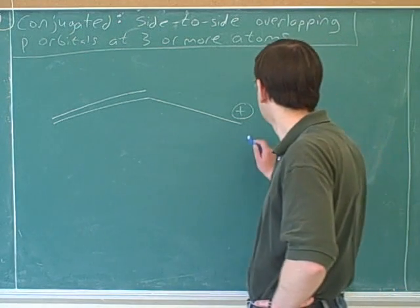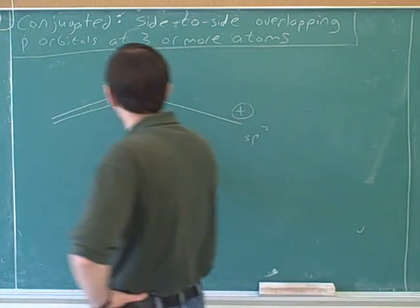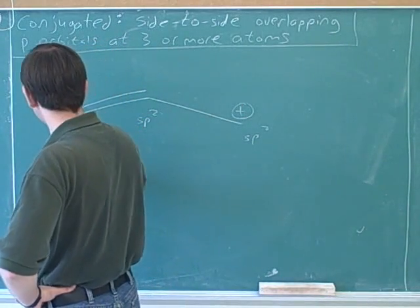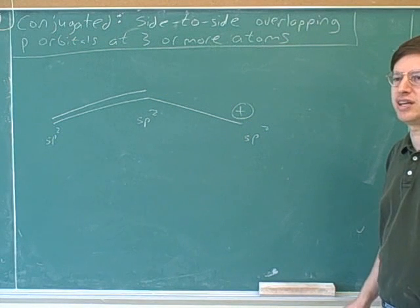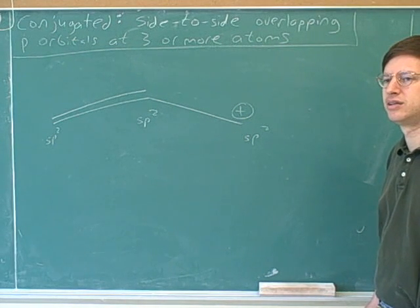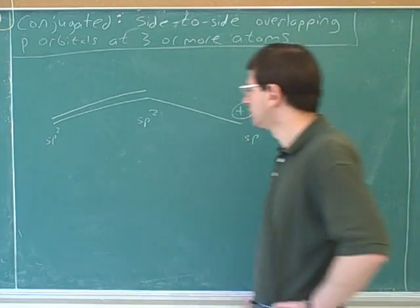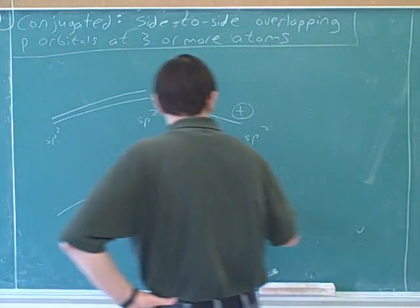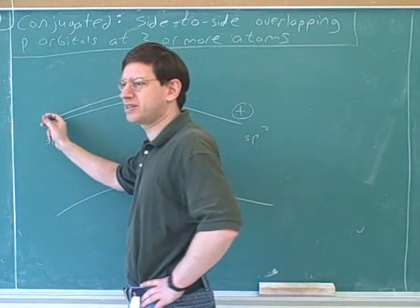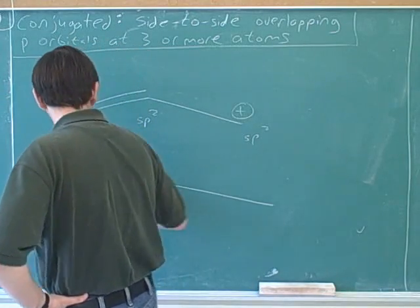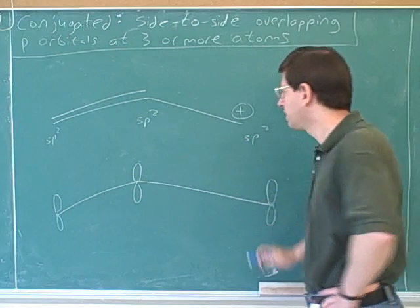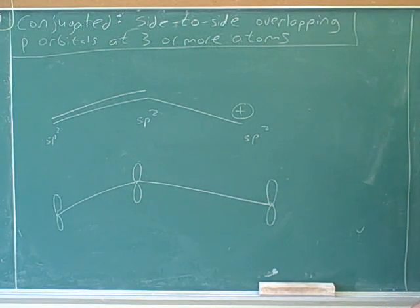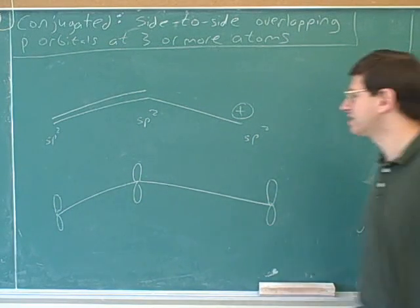They're all sp2? Correct. Again, we reviewed how to find all those hybridizations in that other video series. These are all sp2. Is this molecule conjugated? Does this atom have any p orbitals? Yes. How about this one? Yes. And how about this one? Yes. So does this satisfy our characteristic for conjugated? Yes, it does.